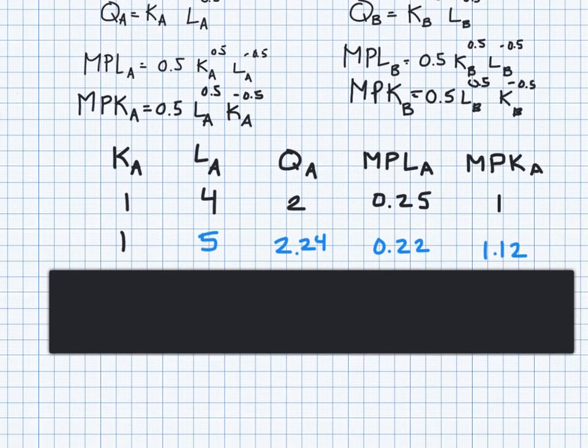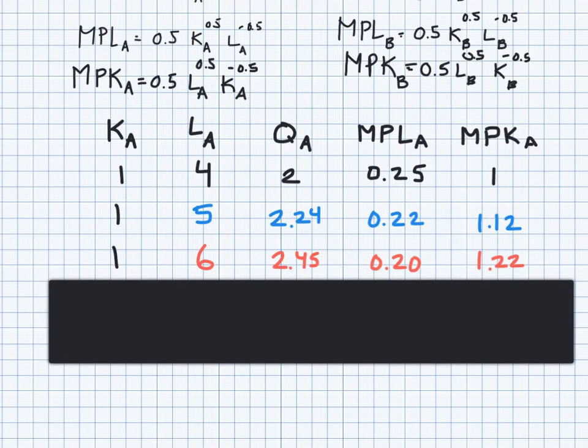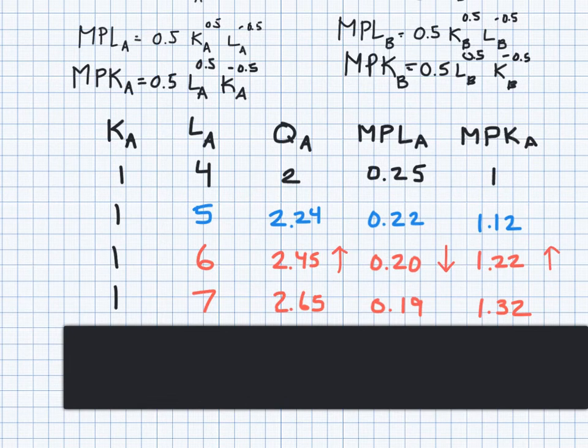All right, so I just want to keep doing this two more times here. So if I added the sixth worker, which is what we did in the previous slide, output is going to increase, and it did. It went from 2.24 to 2.45. I said the marginal product of labor will decrease because each worker will have less capital at his or her disposal. So it went from 0.22 to 0.20. It decreased. And I said the marginal product of capital is going to increase because each machine now has more workers working it. And the marginal product of capital increased from 1.12 to 1.22. And if I continue doing that, if I added another unit of labor, you can see once again that output increases, marginal product of labor decreases from 0.20 to 0.19, and the marginal product of capital increases, 1.32 instead of 1.22.